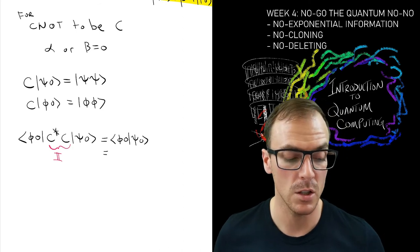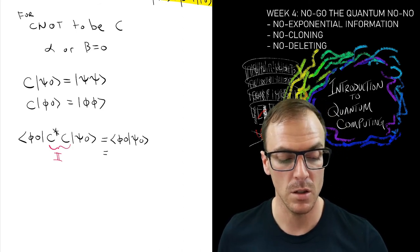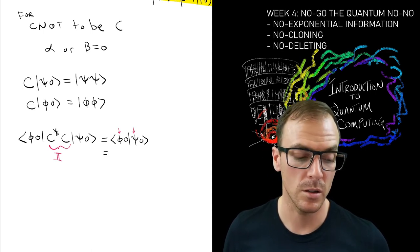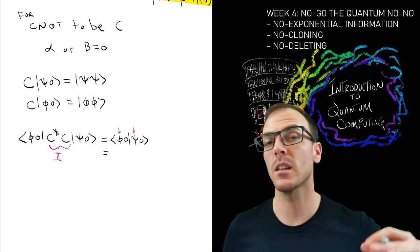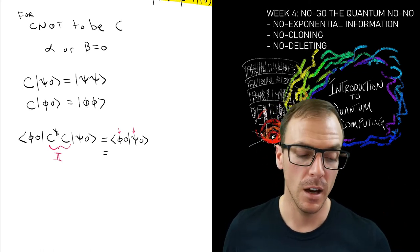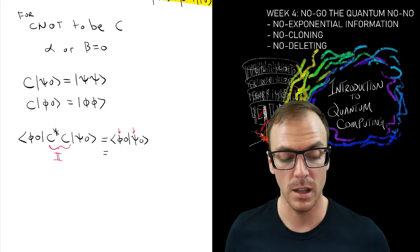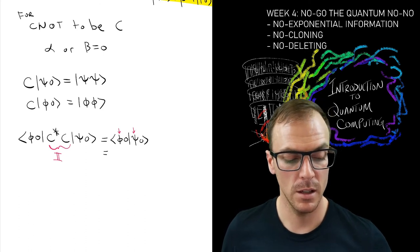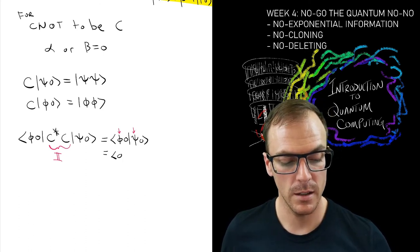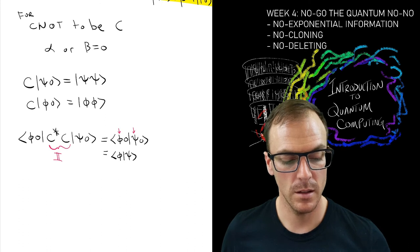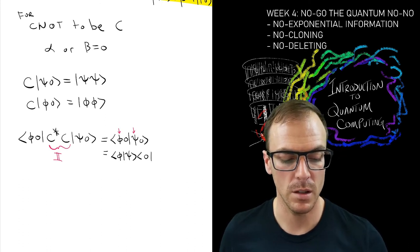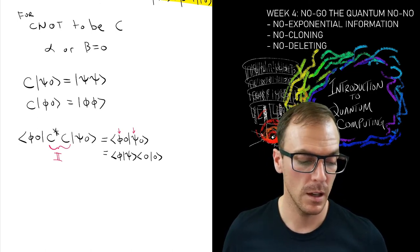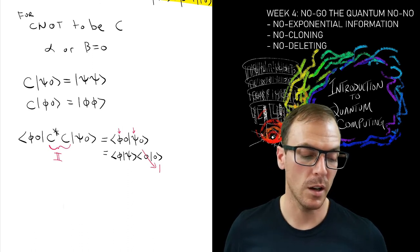So we'll take the second equation and take the complex conjugate, so I have ⟨φ|⟨0|C†C|ψ⟩|0⟩. The first thing to notice is that this equals the identity because C must be unitary. So that reduces to ⟨φ|⟨0||ψ⟩|0⟩, which we can write as ⟨φ|ψ⟩⟨0|0⟩, and ⟨0|0⟩ has inner product one.